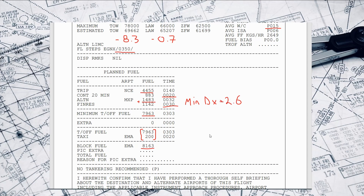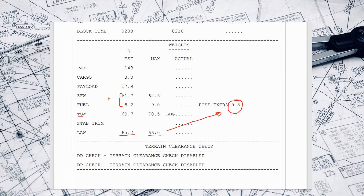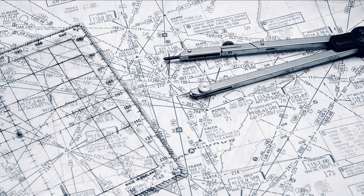So for the fuel decision today: there are no aircraft defects, nothing in the NOTAMs or the weather that I can see. We're arriving into Nice with minimum diversion fuel plus 20 minutes, and I can't see any reason to take any more fuel. I'll be happy with the block fuel of 8,163 kilograms. If we're both happy with that as a crew, we would then go through the weights, calculate all these weights ourselves and check we agree on the numbers, and with all that done we can head out to the aircraft.